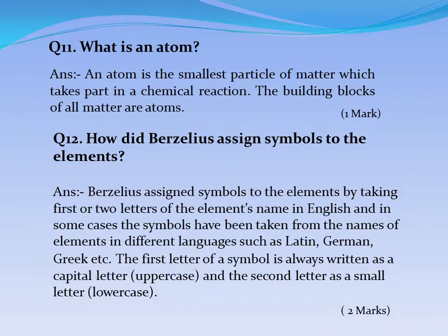Question No. 12: How did Berzelius assign symbols to elements? Answer: Berzelius assigned symbols to the elements by taking the first one or two letters of the element's name in English, and in some cases symbols have been taken from the names of elements in different languages such as Latin, German, Greek, etc. The first letter of a symbol is always written as a capital letter and the second letter as a small letter.